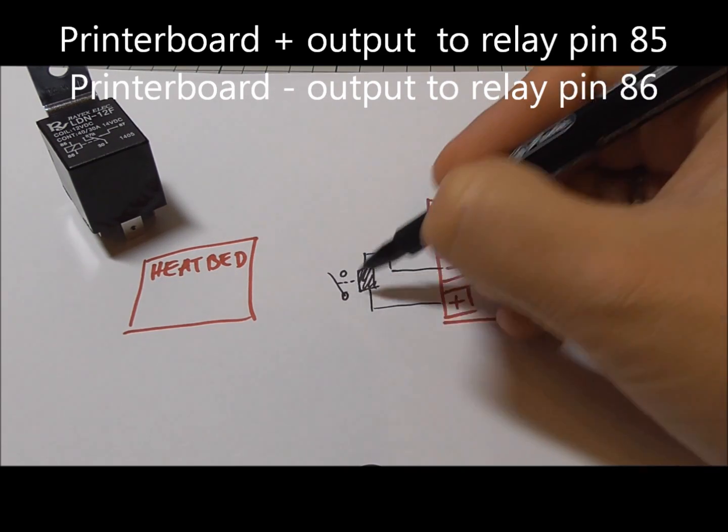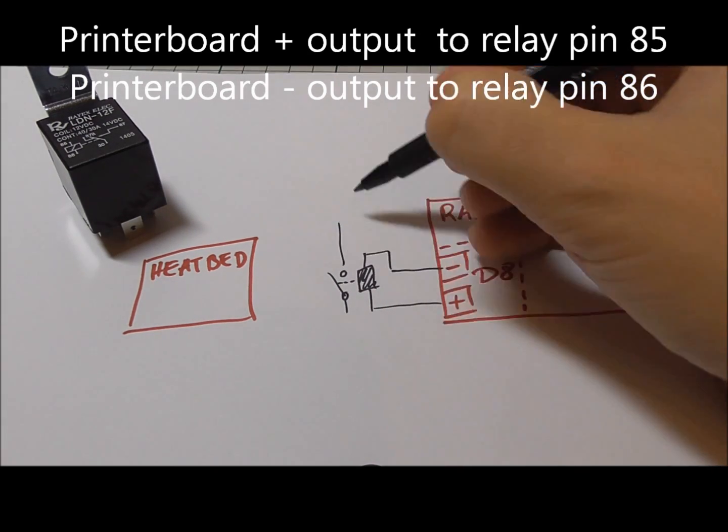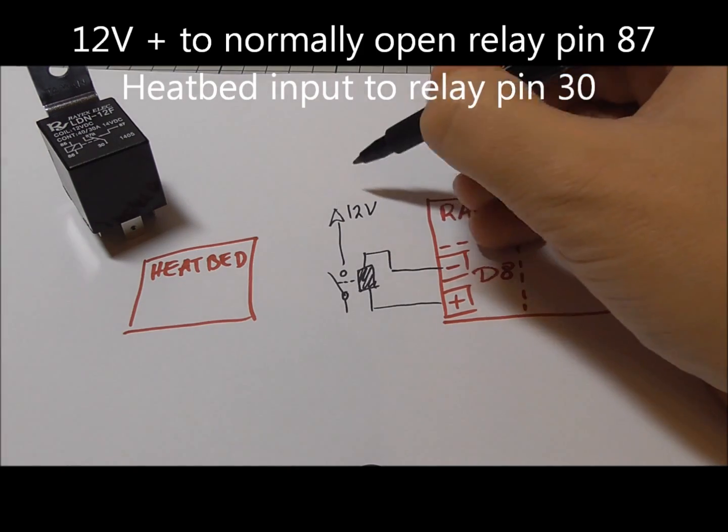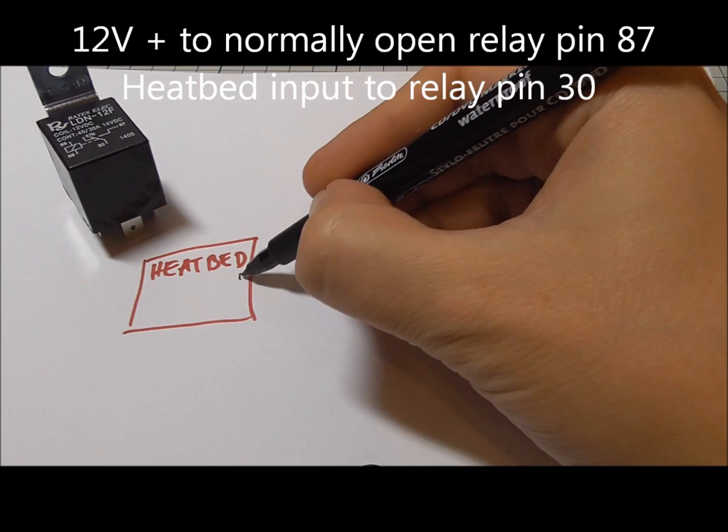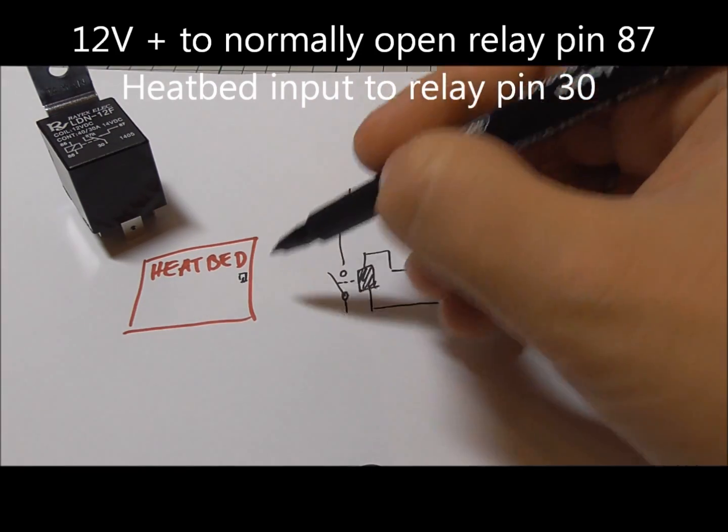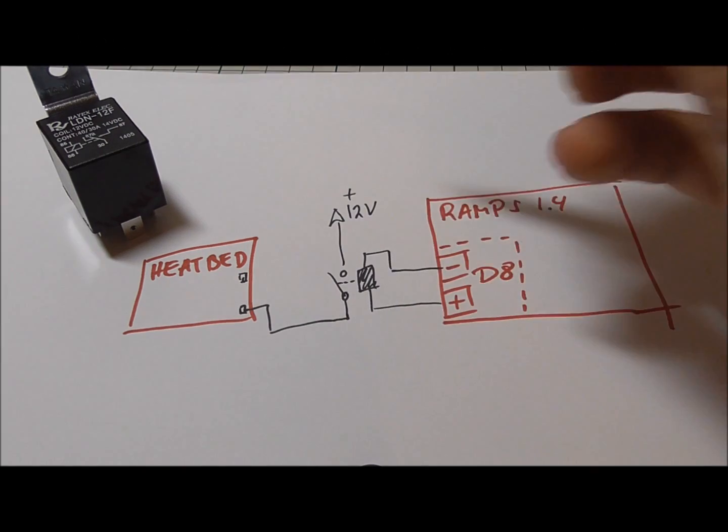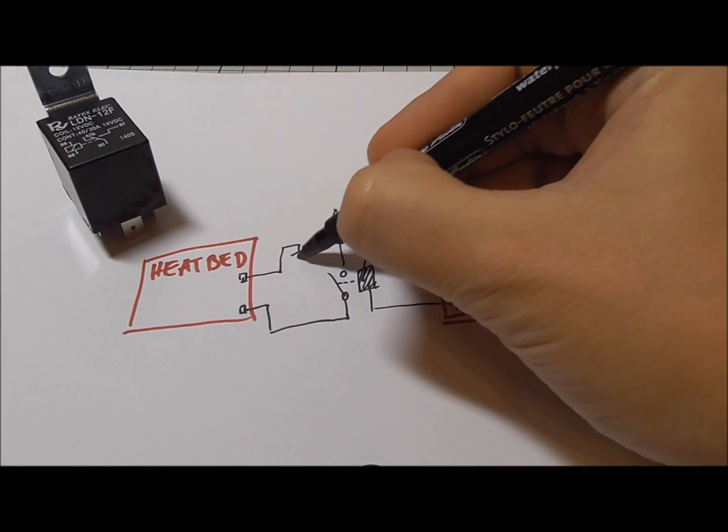The relay coil should be connected to the heat bed output of your printer board, plus to relay input 85 and minus to relay output 86. The normally open output of your relay, pin 87, must be connected to constant 12V plus of your power supply. And pin 30 needs to be connected to one of your printer bed inputs. The other printer bed input must be connected to ground.